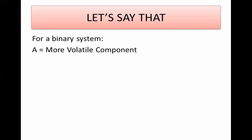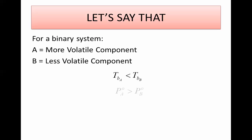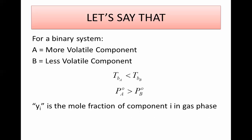In a binary system, component A is the more volatile component and B is the less volatile. More volatile means it evaporates quickly — it has a low boiling point and a high vapor pressure. As a component becomes more volatile, it needs to reach only a low temperature to evaporate. The mole fraction of component i in liquid is x_i and in vapor is y_i.